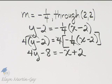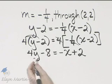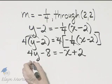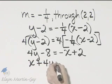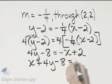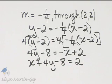Now let's write it in standard form. I will add x to both sides. If I add x to the left side, I'll have x plus 4y minus 8 is equal to 2, because adding x to this side, they subtract out.